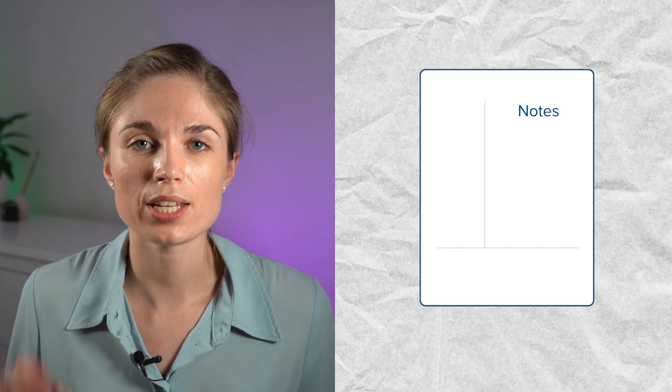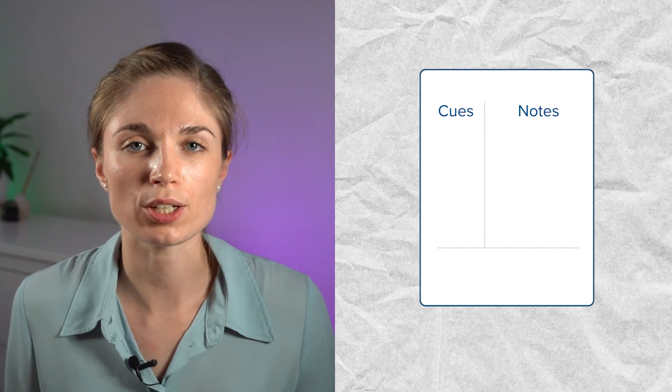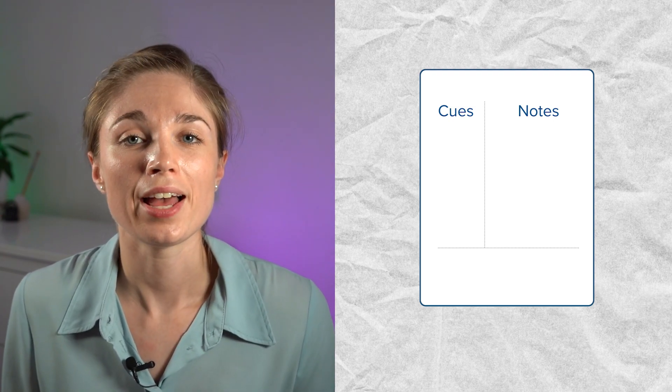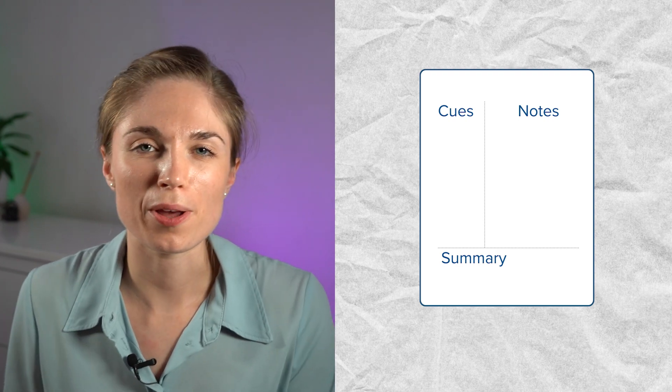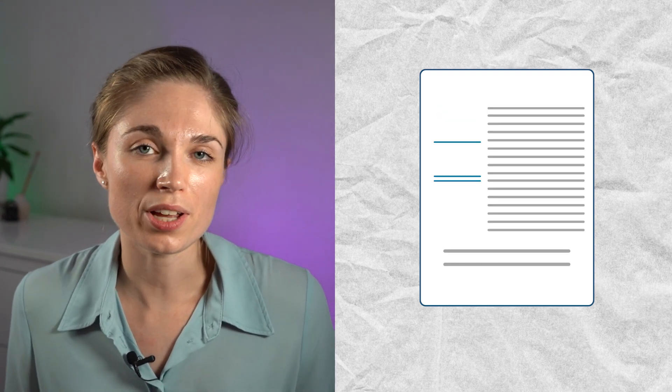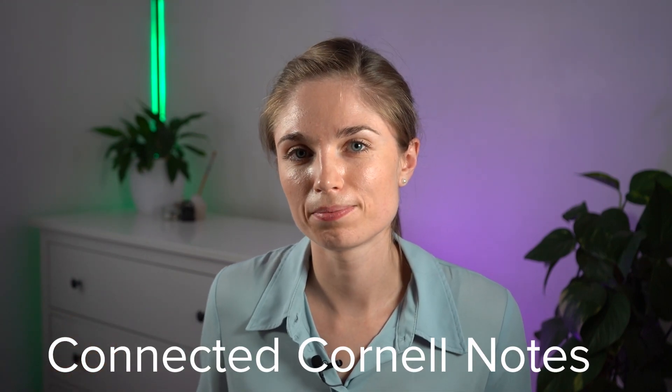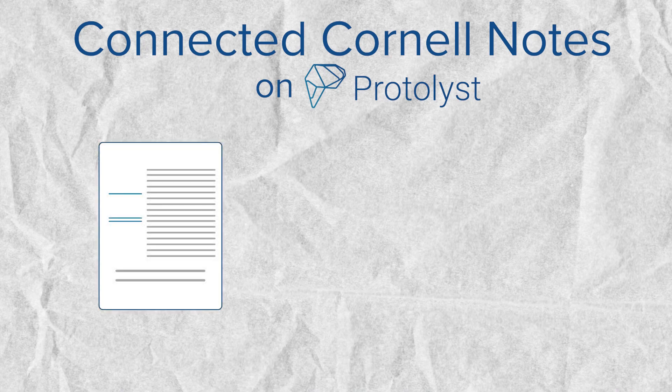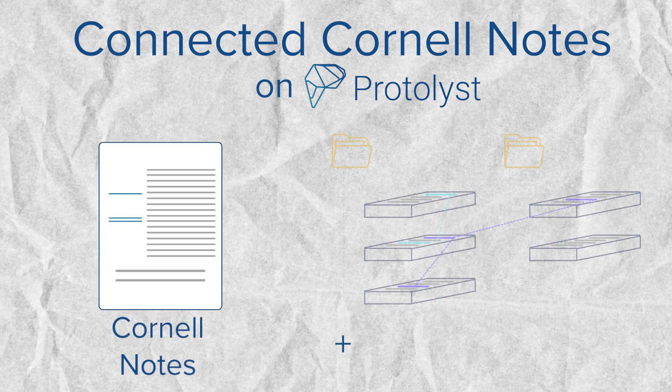We should do a quick recap on the Cornell method. It involves splitting your page into three sections: a notes section, next to it a cues section for your keywords and questions, and at the bottom a summary section. You take your notes, add in keywords and questions, and when you're done you summarize what is contained in the note. This variation I've been using comes under the working title of Connected Cornell Notes.